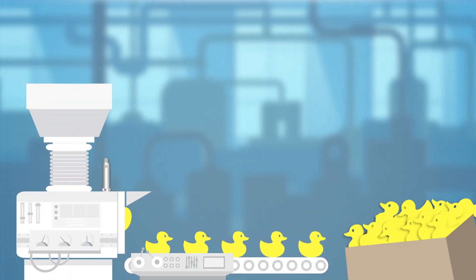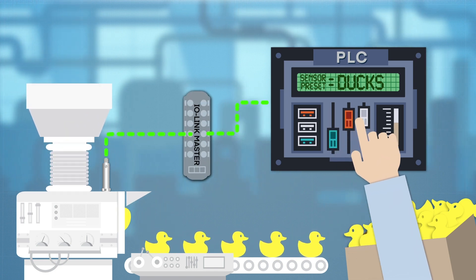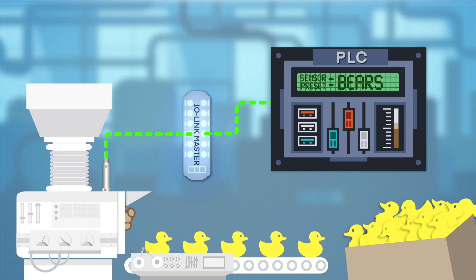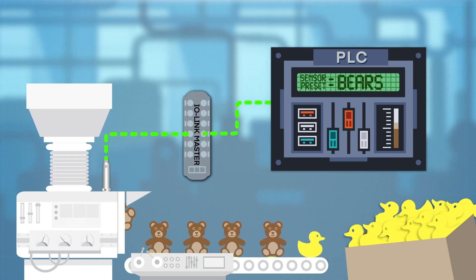For example, if a manufacturer is producing two different products on the same line and needs to change sensor settings between processes, by storing sensor-specific parameter sets in the PLC and then sending them out through the IO-Link master to the sensors, major downtime can be eliminated because there's no need to pull each sensor and reconfigure them manually.